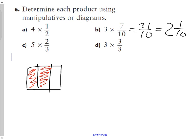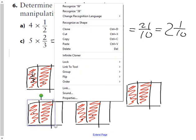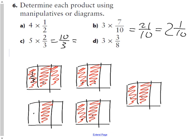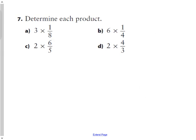For part C, we have five groups of two-thirds. How many thirds do I have in total? Counting them: one, two, three, four, five groups with two thirds each gives ten thirds. As a mixed fraction, rearranging the pieces, three groups make one whole each, so the answer is three and one-third.